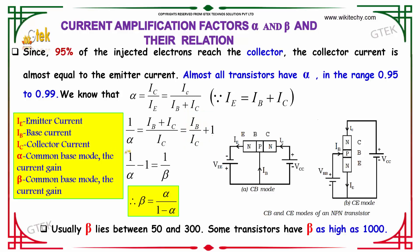So 1/alpha minus 1 equals 1/beta, which indicates beta equals alpha divided by 1 minus alpha.